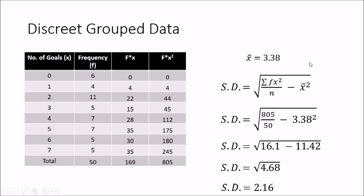Instead of just taking x-squared for each individual value, I multiply by the frequency f, giving the fx-squared column. To get fx-squared, I take the fx column and multiply again by the number of goals. The totals give sigma fx-squared as 805. Dividing by 50 and subtracting x-bar squared (3.38 squared) gives 4.68, and taking the square root gives a standard deviation of 2.16.